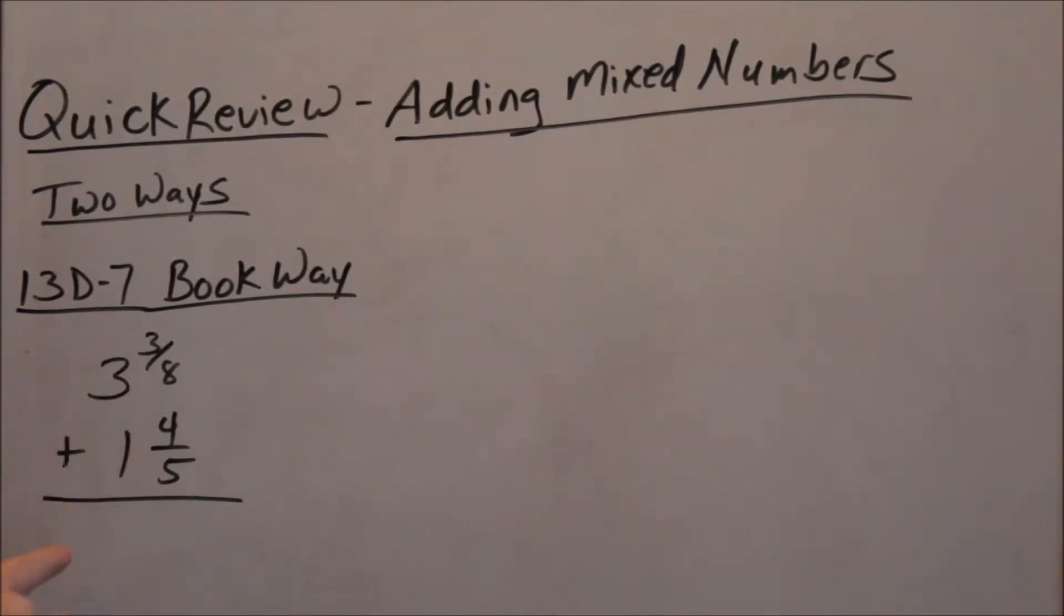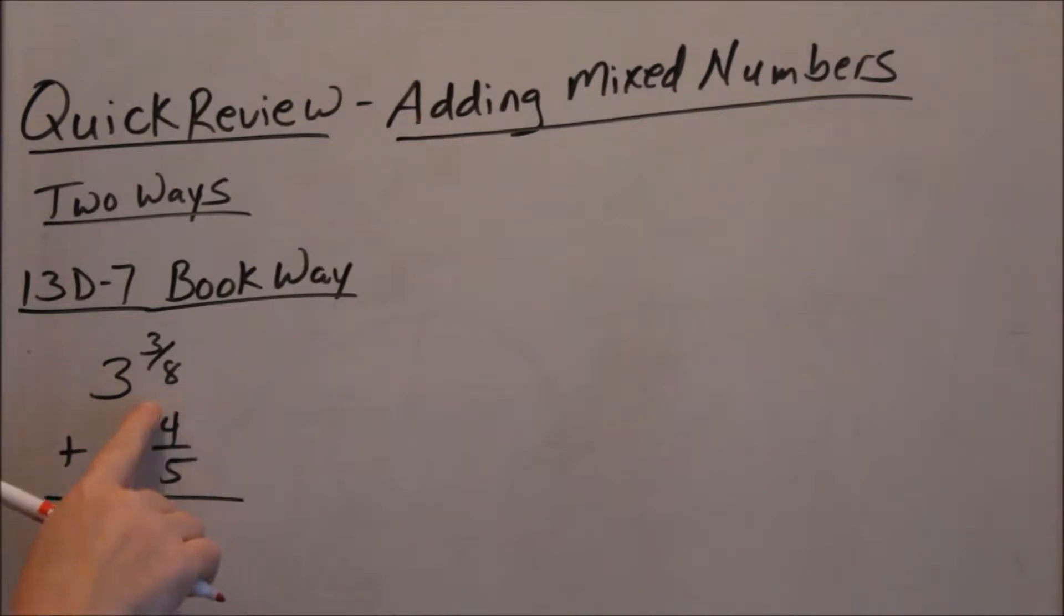So when you're adding mixed numbers, anytime you add fractions, you have to have a common denominator. So I'm just going to leave these as a mixed number and make a common denominator with these fractions. Remember, when you make a common denominator, you take this denominator, multiply it to this fraction, then take that denominator and multiply it to this fraction.